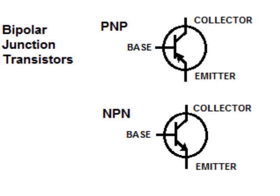One way to remember how the schematic symbol of the transistor goes: the arrow of the NPN transistor is NOT POINTING IN — NPN. The PNP's arrow is POINTING IN — PNP.